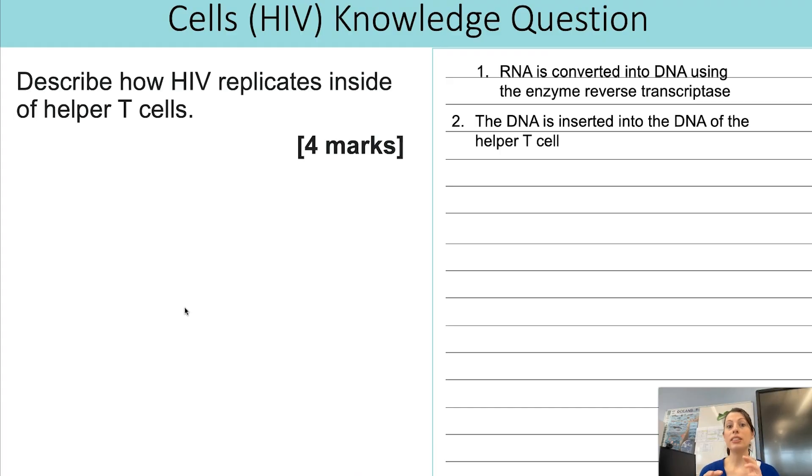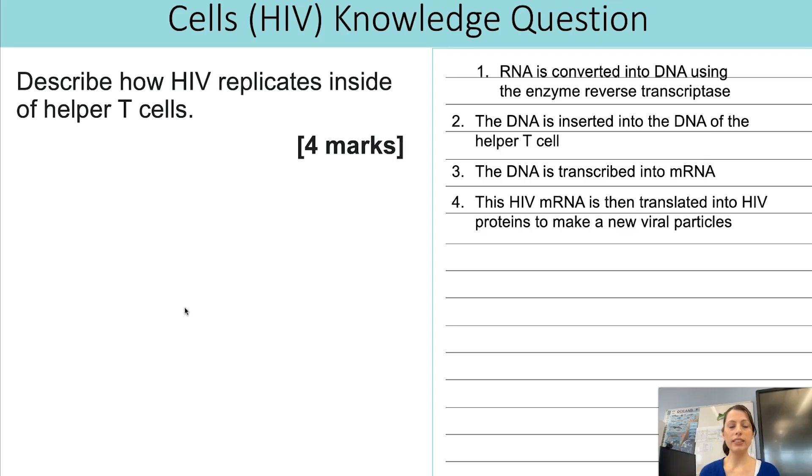Then we can say what happens to that DNA that has been created. So that DNA then gets inserted into the DNA of the host cell which is a helper T cell for HIV. Then that DNA now is in the helper T cell's DNA. It will be transcribed with all of the rest of the DNA.